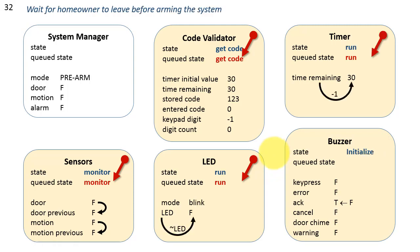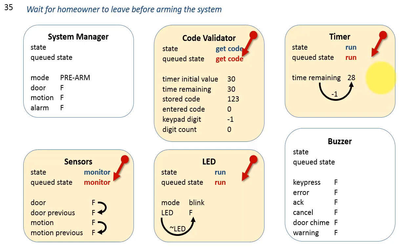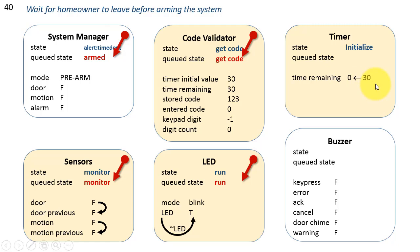At this point the timer is counting down towards zero, and we are waiting for the homeowner to leave before arming the system. The current time is decremented by one, and the timer self-enqueues the run state while counting down. The homeowner is now in the process of leaving the house as we watch time remaining count down. When time remaining minus one equals zero, the timer issues the timed out message to the system manager and enqueues its initialized state, simply resetting time remaining back to 30.